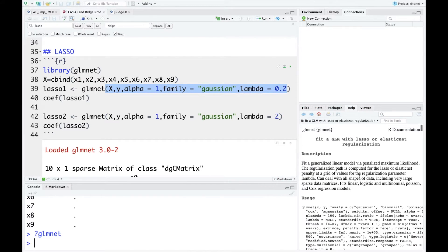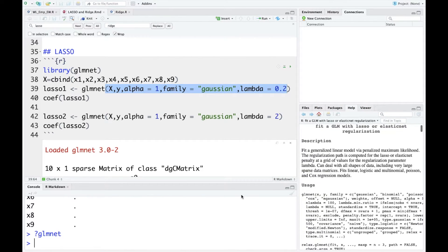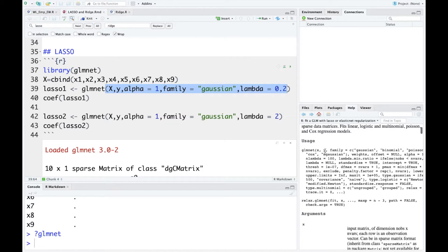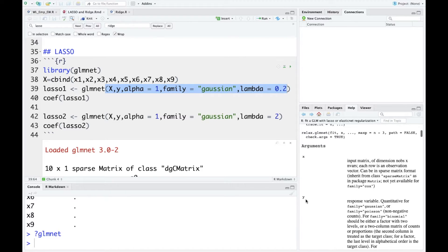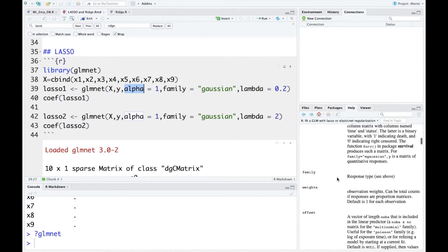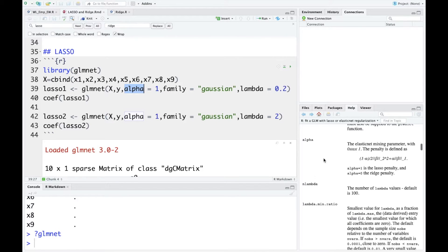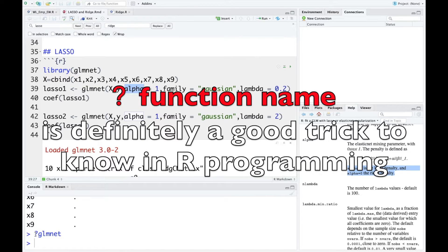You can take a look at the arguments here. So you do need to supply an x argument, a y argument. And for alpha, you can check the detail for argument here. So for alpha, it is stated that alpha equals to 1 is Lasso and alpha equals to 0 is ridge. So yeah, you don't have to memorize that. You just need to key in question mark glmnet.